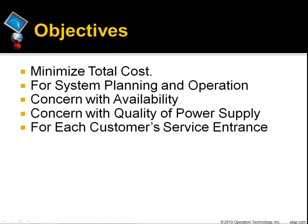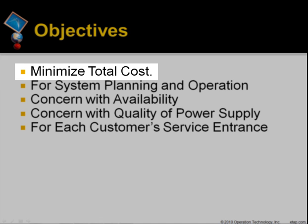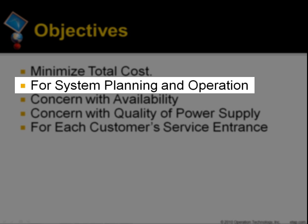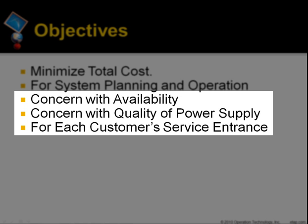Now let's look at the main objectives of ETAP reliability analysis model. One is to minimize total cost, meaning reliability cost and consumer interruption cost. Two, it can be used for system planning and operation. Three, it concerns the availability and quality of power supply at each customer's service entrance.